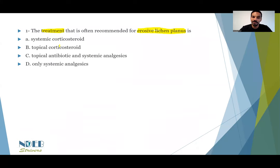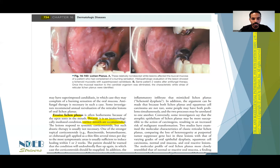We did have two types of corticosteroids: systemic corticosteroid and topical corticosteroid — so which one is better? This is exactly the case you would usually be facing in the AFK exam: two options that are very close and you have to pick the best one. We excluded topical antibiotic and only systemic analgesics. The lesions respond to systemic corticosteroid, but such drastic therapy is usually not necessary. The question asks what is most often recommended.